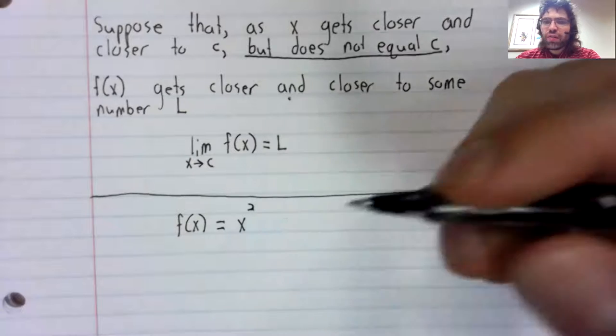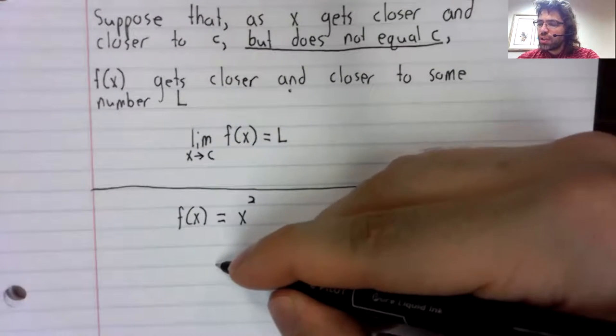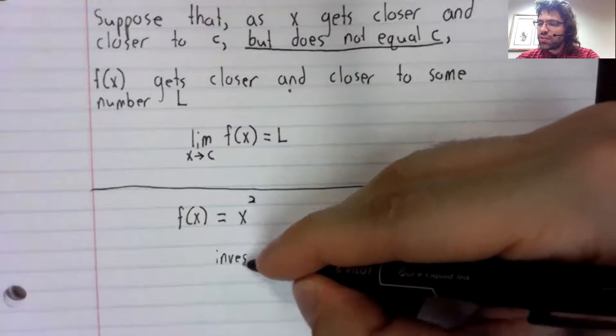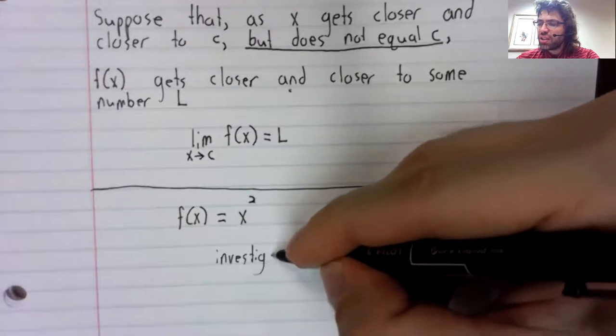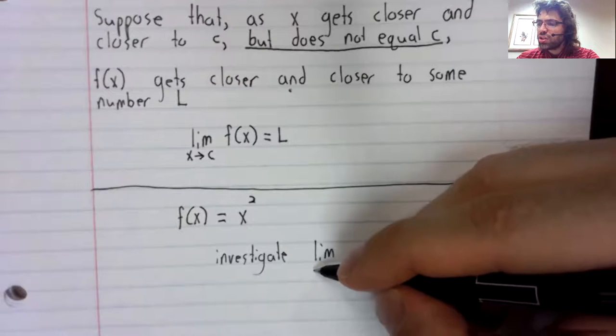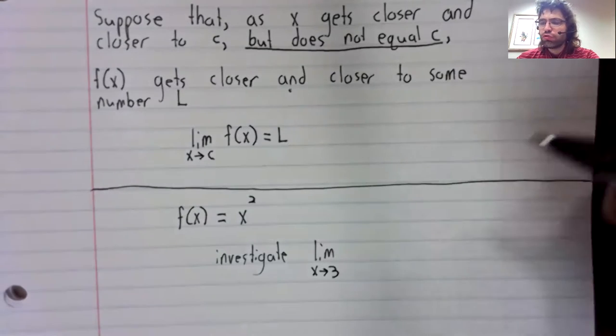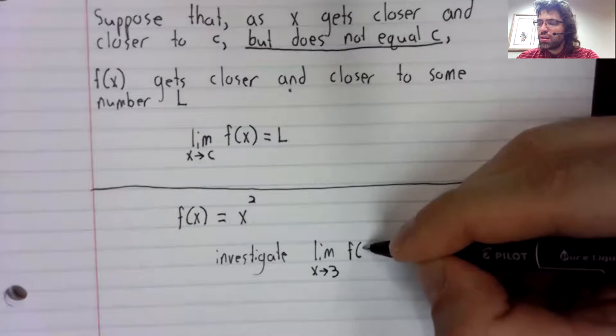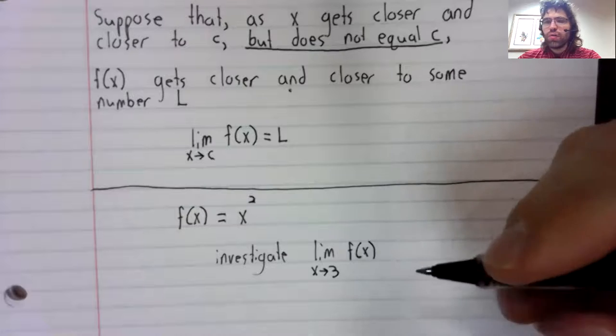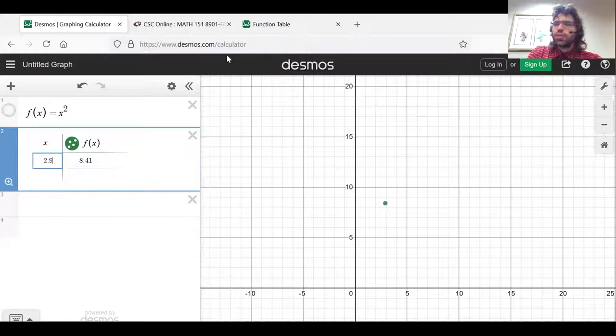Let's say that f of x equals x squared. And let's investigate the limit as x approaches 3 of f of x. Note that this is a little different from the example in my notes.